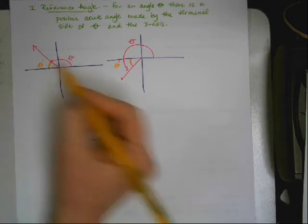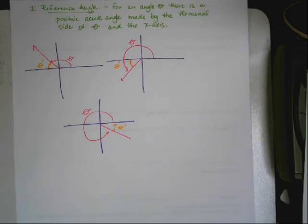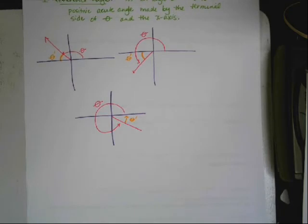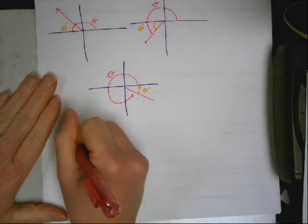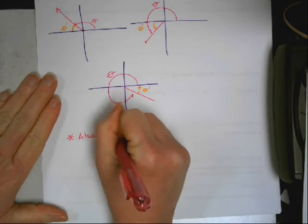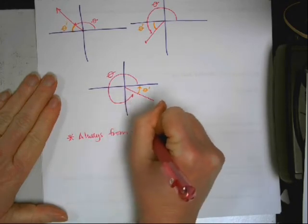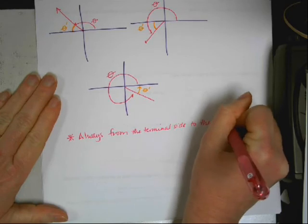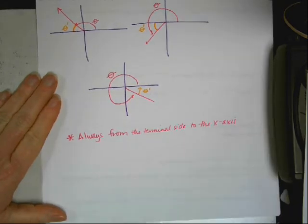So reference angles are always acute angles from the terminal side back to the x-axis. Always back to the x-axis every time. So here's one in quadrant 2, quadrant 3, and quadrant 4. There's no need for reference angles in quadrant 1 because any angle that ends in quadrant 1 is already acute. So quadrant 1 doesn't have reference angles. But always from the terminal side to the x-axis. Always. Don't ever, ever, ever draw back to the y-axis.